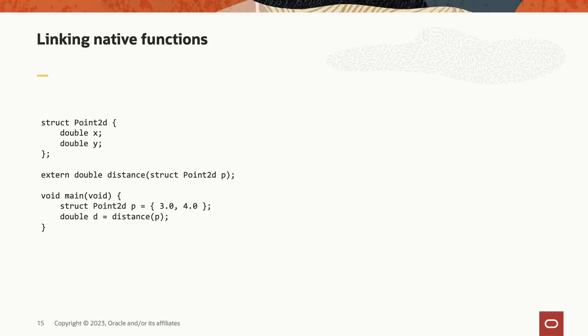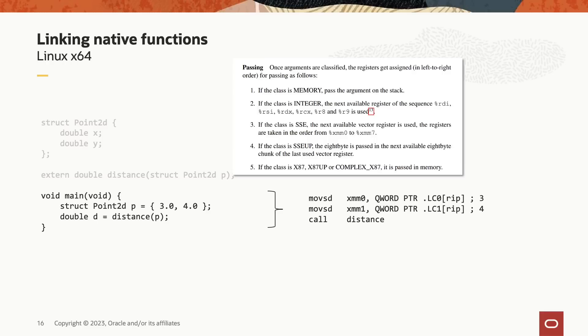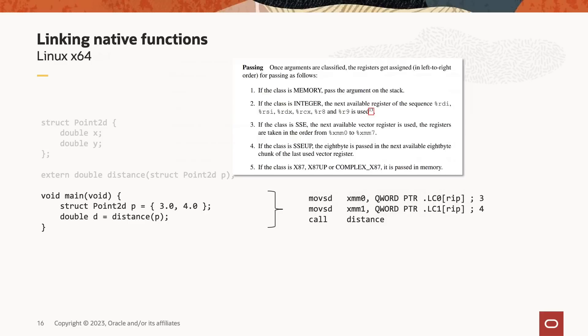Let's look at an example of linking native functions. We have a Point2D struct with a distance method calculating distance from the origin. When compiled on Linux, the assembler generates code supporting the platform calling convention — the ABI. On Windows, the details are going to be different. The linker has to understand what platform it's running on and at runtime support the differences in calling conventions. It can do this optimally by leveraging dynamic code generation and C2 to optimize these calling conventions efficiently. In JNI you lean on your compiler toolchain, but now we're doing it dynamically.